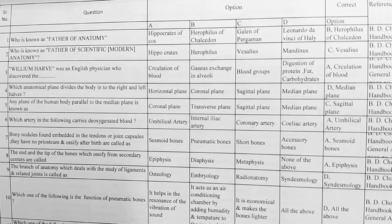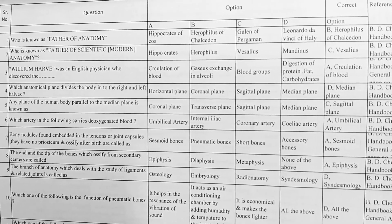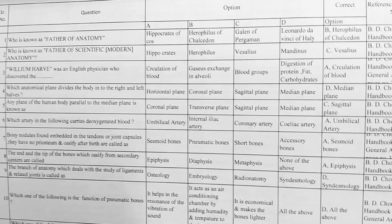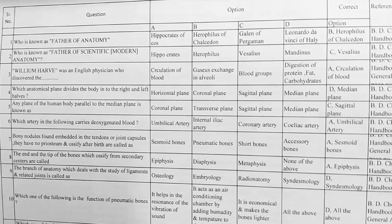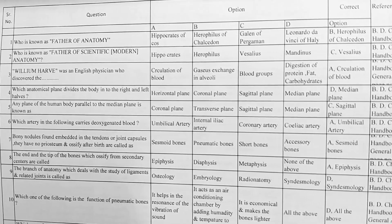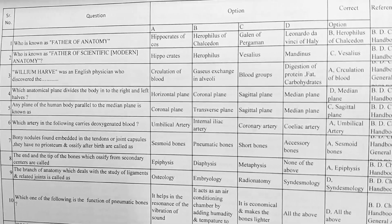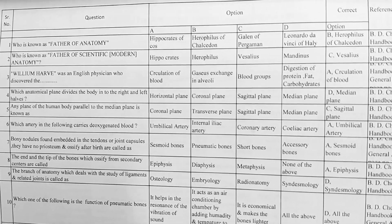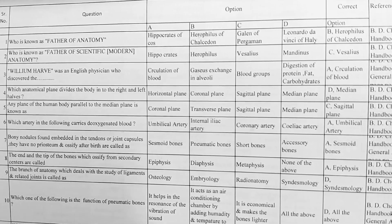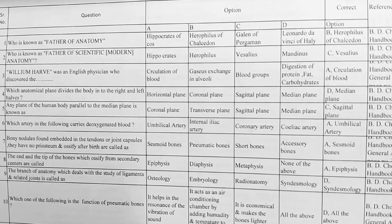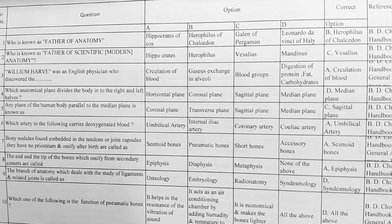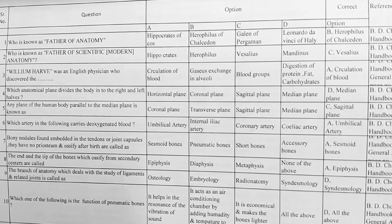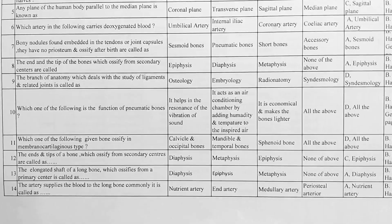Next, bony nodules found embedded in the tendons or joint capsule, they have no periosteum and ossify after birth, are called sesamoid bones. Options: A. sesamoid bone, B. pneumatic bone, C. short bones, D. accessory bone. Correct answer is A, sesamoid bones.